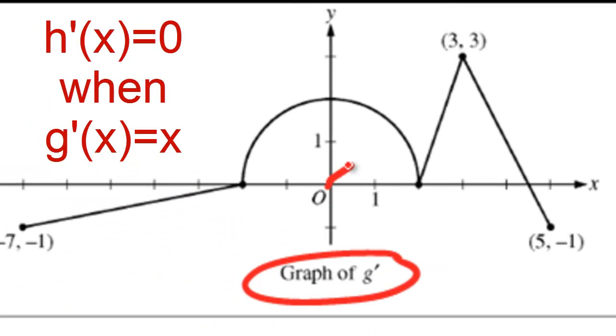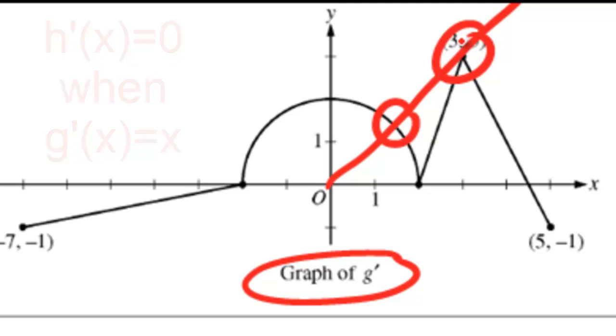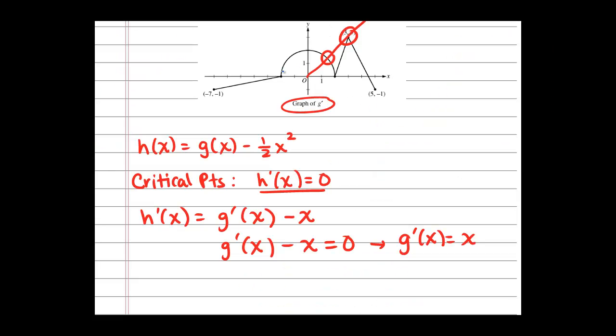The graph that you were given in this problem is of g prime. I'm going to graph the line y equals x and two places where my picture here intersects y equals x will be our two critical points. So, let's go ahead and figure out using the equation of this semicircle, which is the square root of 4 minus x squared, and I'm going to set that equal to x. And I'm going to figure out for what x values this will be true. So, square both sides.